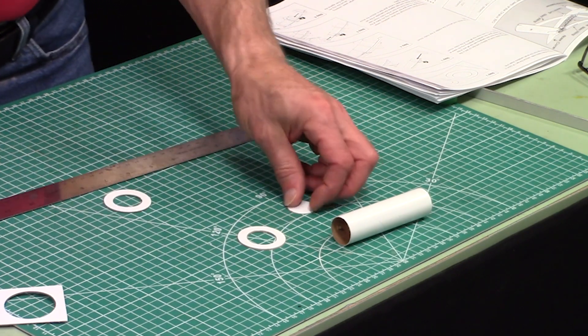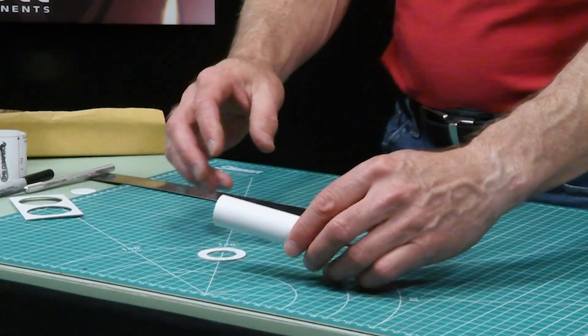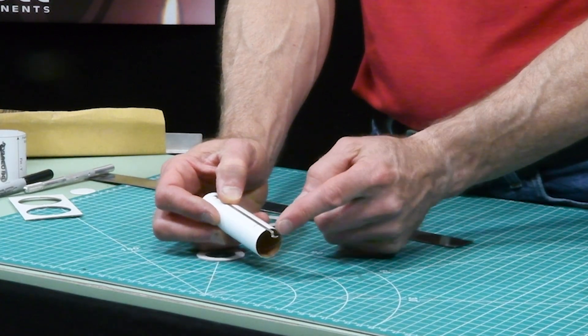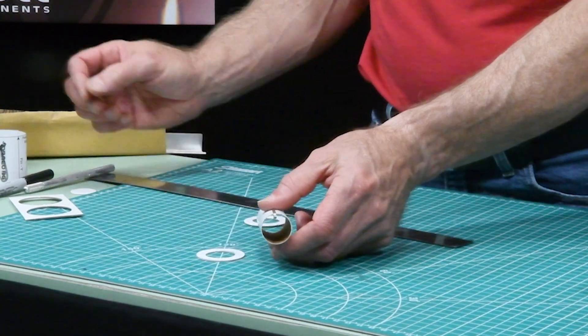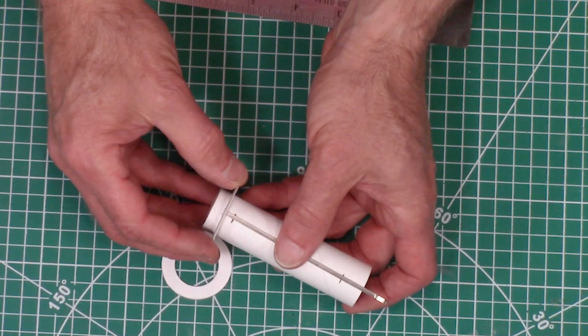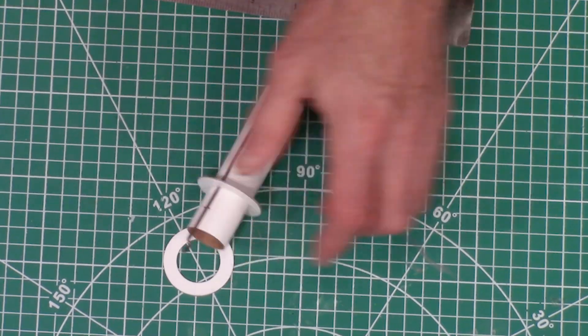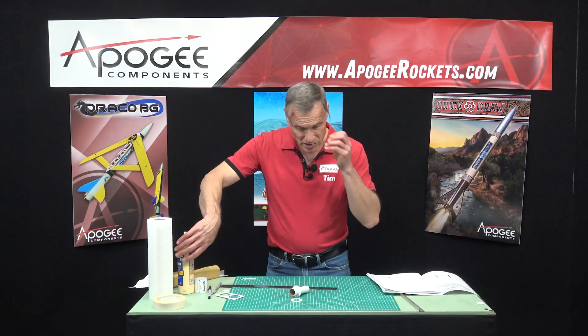Now we're going to take one of the rings and glue it on to this end, where the engine hook sticks over the edge of the tube. I'm going to slide it over the ring and it's going to be glued right at that line there.